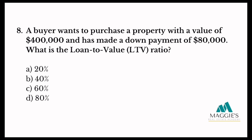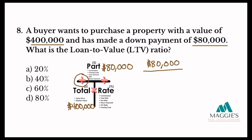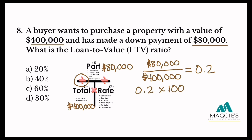Number eight: a buyer wants to purchase a property with a value of $400,000 and has made a down payment of $80,000. What is the loan to value ratio? Using the T-chart, the property value of $400,000 goes in the total column, and the $80,000 goes on top in the part column. We divide: $80,000 divided by $400,000 equals 0.2. Multiply by 100 to convert to a percent — that equals 20%. So our loan to value ratio is 20%. The answer is A.